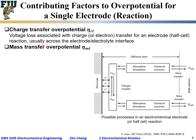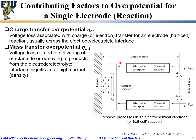Another contributing factor to overpotential is the so-called mass transfer overpotential — μ_mt, where mt stands for mass transfer. We'll talk about this term in greater detail, but essentially it's related to the voltage loss for delivering reactants to the electrode-electrolyte interface, or for the removal of products from the electrode-electrolyte interface.